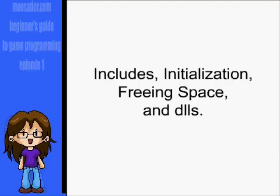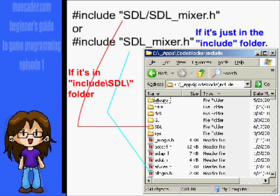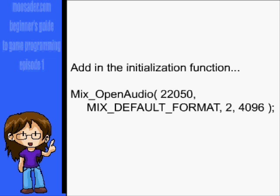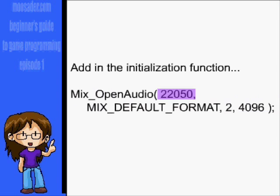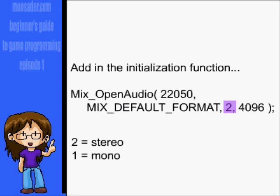Because we're using SDL Mixer, we'll have to add an extra include in our files using the mixer. Use either "#include SDL_mixer.h" or "#include SDL/SDL_mixer.h" depending on how you have it set up in the IDE's directory. Now in the initialization function, we'll have to include the Mix_OpenAudio function. The first parameter is the sound frequency, the second is the sound format, the third is the amount of sound channels with two for stereo and one for mono, and fourth is the sample size.